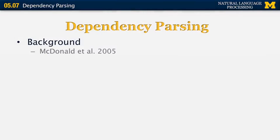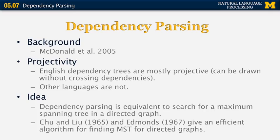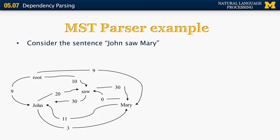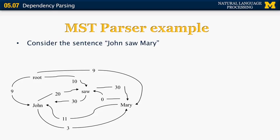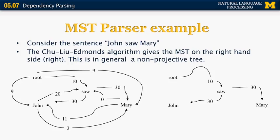The McDonald 2005 paper reduces dependency parsing to finding a maximum spanning tree in a directed graph, using well-known methods by Chu, Liu, and Edmonds. For example, the sentence 'John saw Mary' is represented as a graph with nodes for John, saw, Mary, and a root, with weights determined from training data. Applying the maximum spanning tree algorithm gives a parse with root pointing to 'saw' as the main verb, and 'saw' pointing to its two dependents, John and Mary.